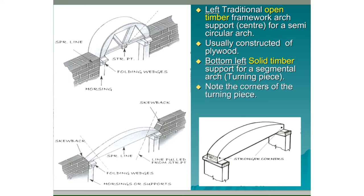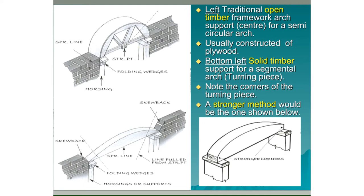Note the corners of the turning piece — they are very slim. A stronger method is the one shown below. When the arch support is made out of a number of different pieces of timber, it is called a centre. When it is carved out of one piece of timber, it is called a turning piece.